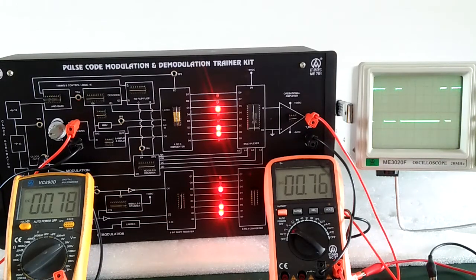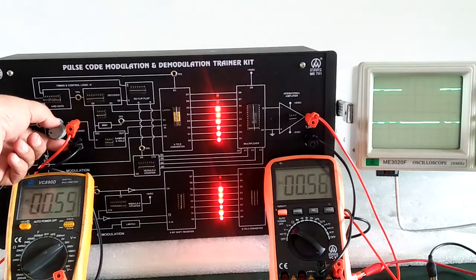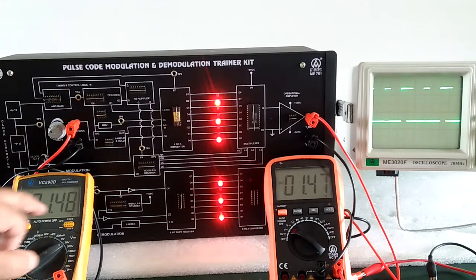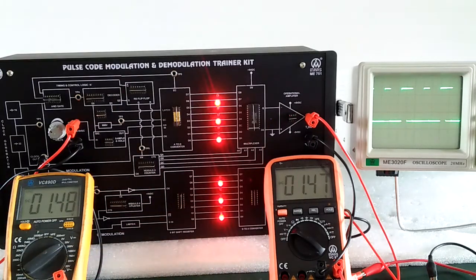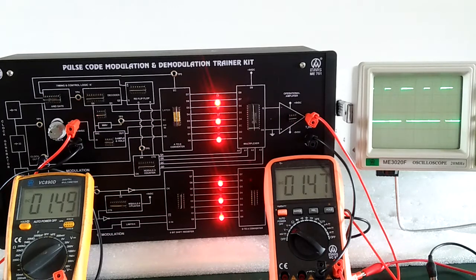When we change the voltage, we can get the data on the CRO accordingly, and get the voltage as input and output the same.